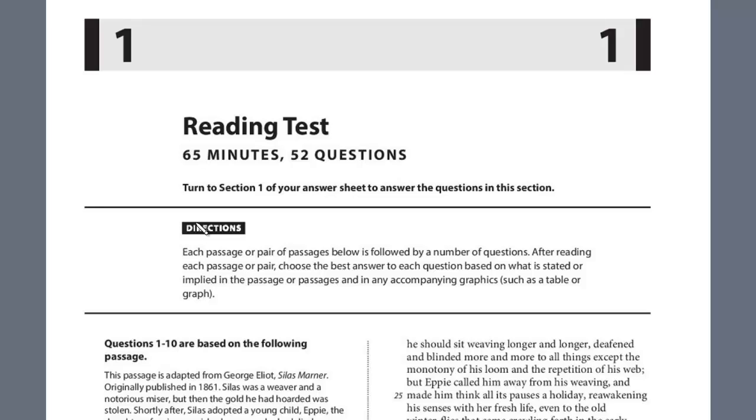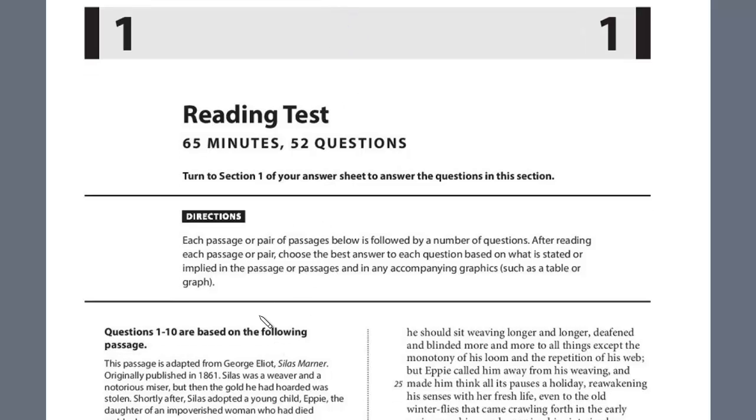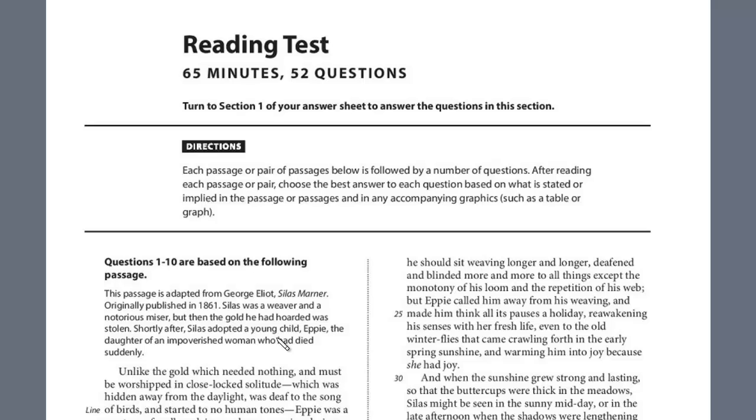In this lesson, we'll continue our review of Reading Test 7, Section 1. We are still on the first passage, questions 7 through 10. If you recall, this is the passage about Silas Marner, who was this notorious miser and hoarder of gold. Then the gold was stolen, and shortly thereafter, he adopted this young girl, Eppie. It really allowed him to have a new perspective, to re-enter life and have a new understanding of the world around him.